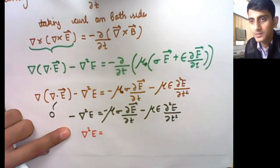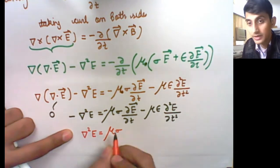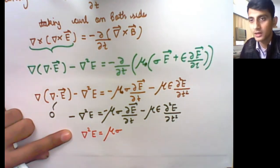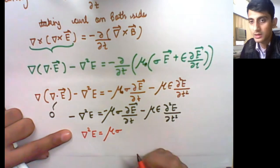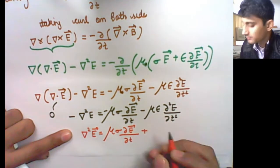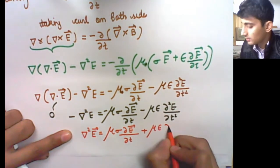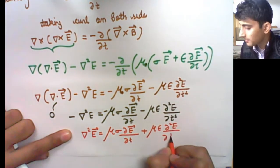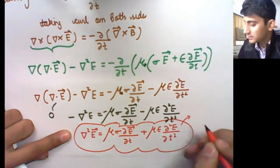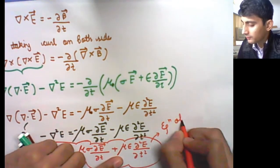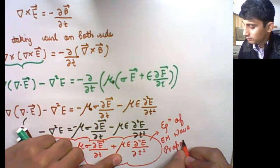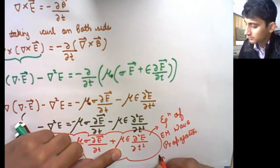To formalize: the Laplacian of E equals mu sigma del E by del T plus mu epsilon del squared E by del T squared, where mu is the permeability, sigma is the conductivity, and epsilon is the permittivity of the conducting medium. This is the equation of electromagnetic wave propagation in conducting media.